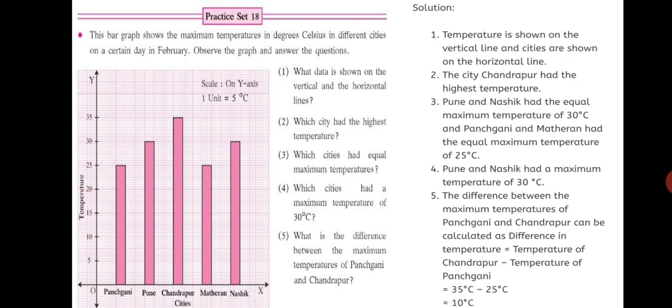What is the difference between the maximum temperatures of Panjgani and Chandrapur? Have a look at Panjgani. It is 25. And Chandrapur is 35. So, the difference is by looking only you will come to know 25 to 35 is 10. 35 minus 25 is 10 degree Celsius. So, the working is shown here. The difference between the maximum temperatures of Panjgani and Chandrapur can be calculated as difference in the temperature is equal to temperature of Chandrapur minus temperature of Panjgani. Which is 35 degree Celsius minus 25 degree Celsius equals to 10 degree Celsius.